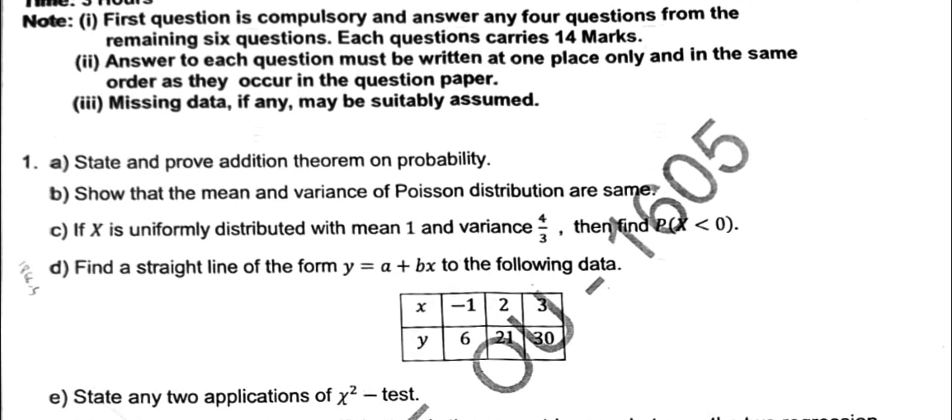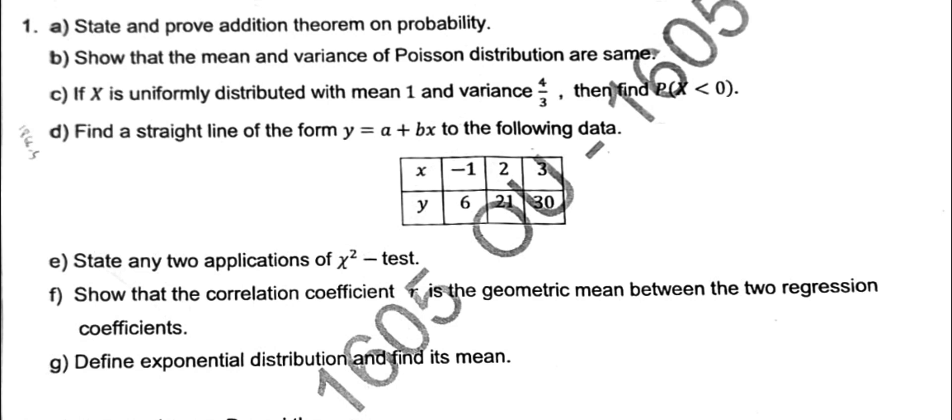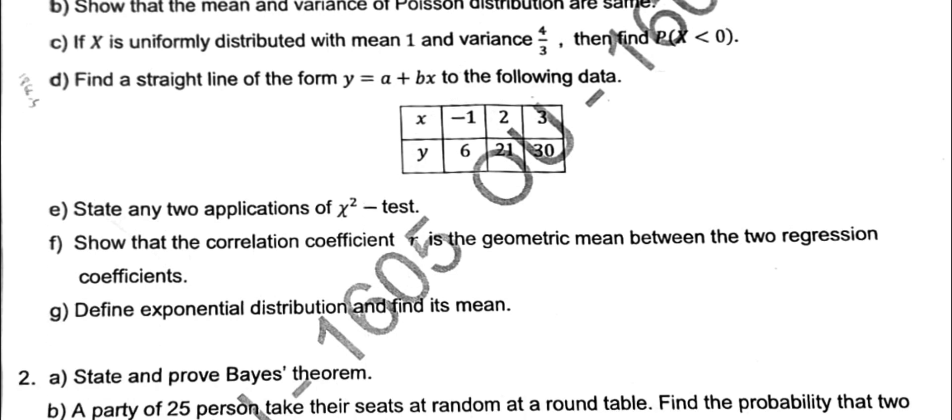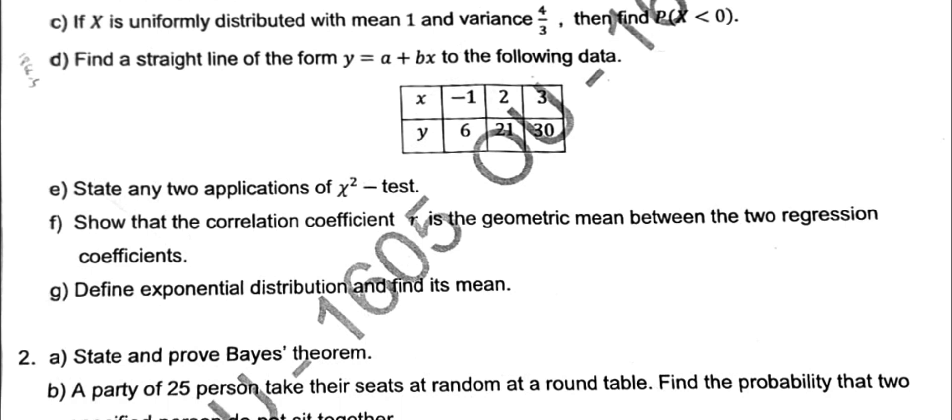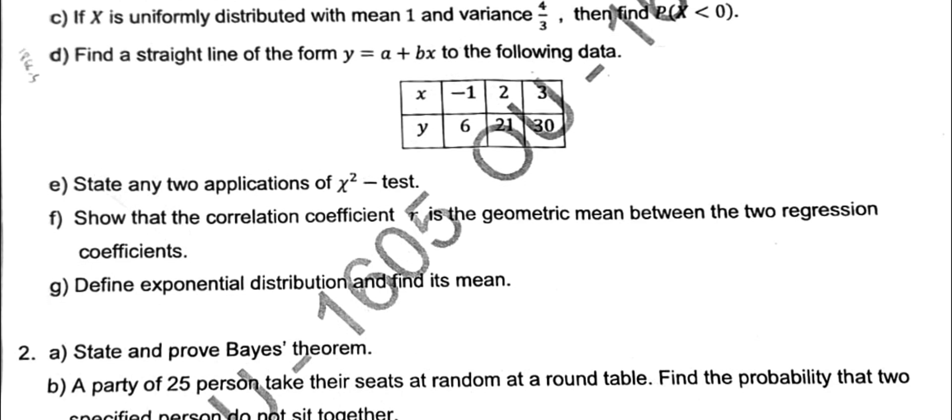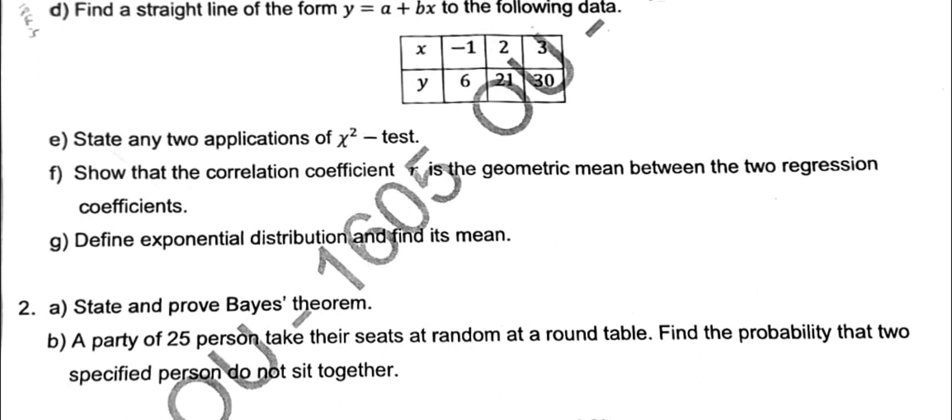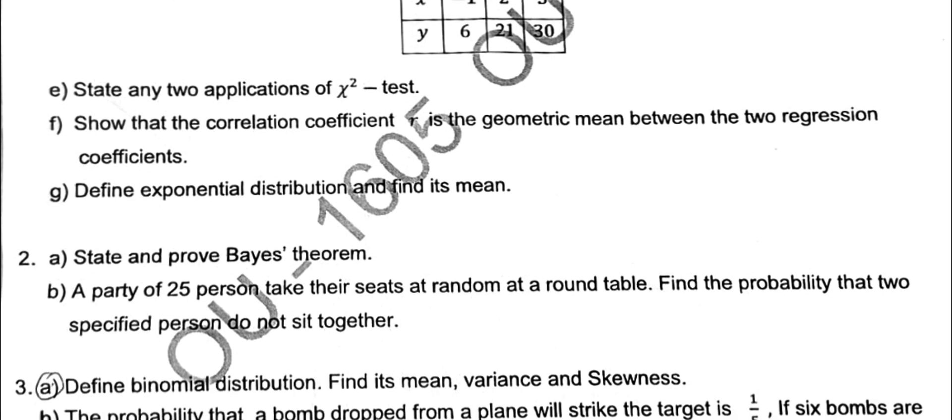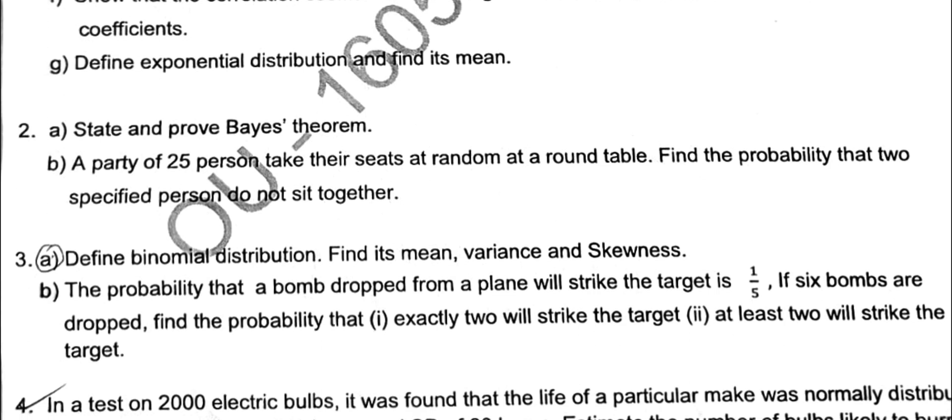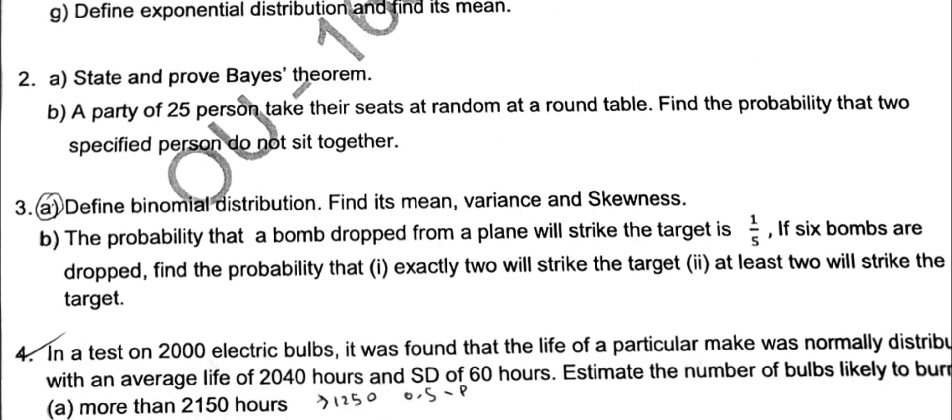D is fitting a straight line. State any two applications of chi-square test - in yesterday's video, short answers video we created that. Then show that correlation coefficient is the geometric mean between two regression coefficients, r equals square root of byx into bxy. Then G, define exponential distribution and its mean also. So you have to write definition and mean.